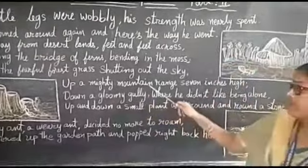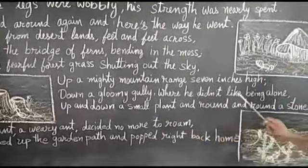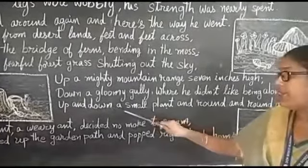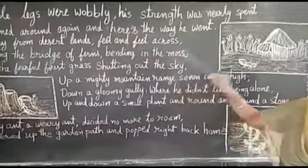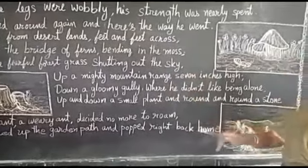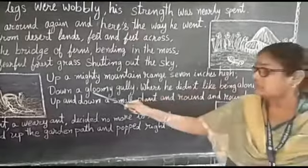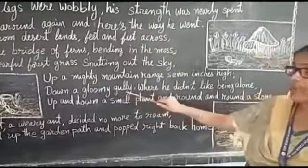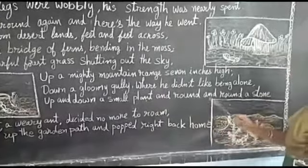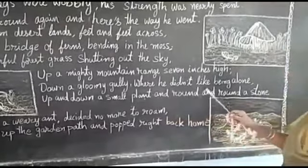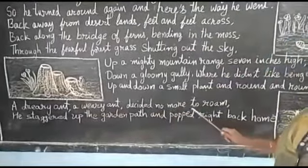Up a mighty mountain range seven inches high, down a gloomy gully where he did not like being alone. Up and down a small plant and round and round a stone. The stone was looking like a very big mountain, though it was only seven inches high. Between the grass he found a gloomy gully — a very dark narrow way — where he did not like to be alone. It was very fearful between the stone and the small plant.